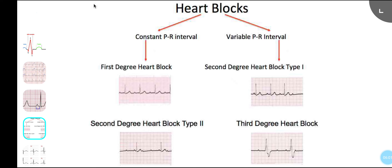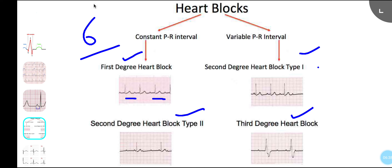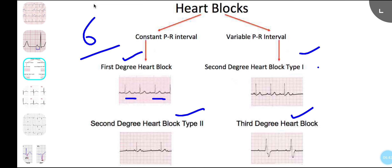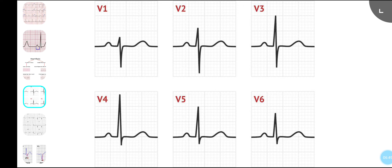Regarding AV blocks: first-degree heart block has constant prolongation of the PR interval. Second-degree type 1 (Wenckebach) has progressive prolongation of PR followed by a dropped QRS, then the cycle repeats. Second-degree type 2 has a normal PR but sudden dropped QRS complexes. Third-degree (complete) heart block has no relationship between P waves and QRS — the atria and ventricles beat independently.